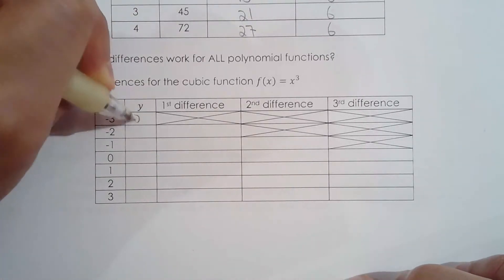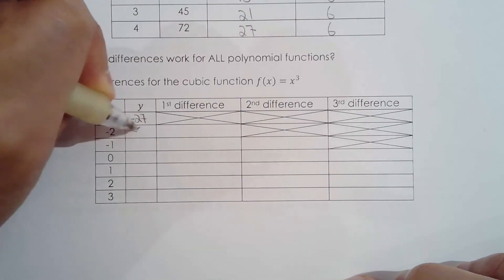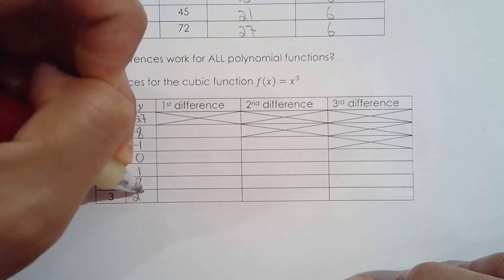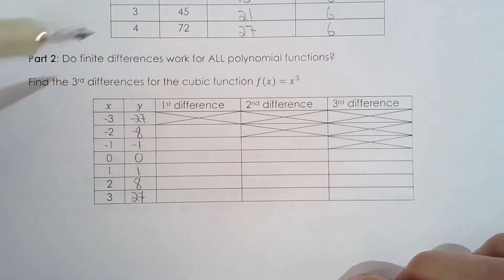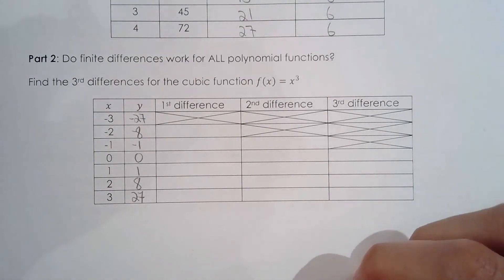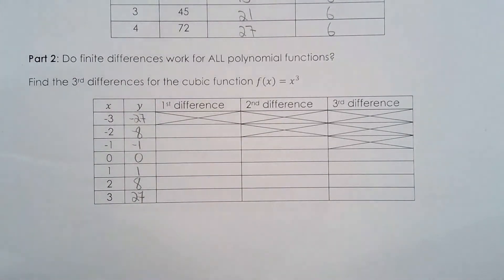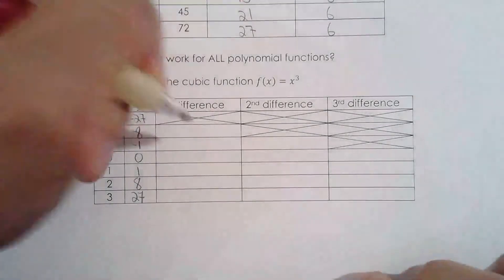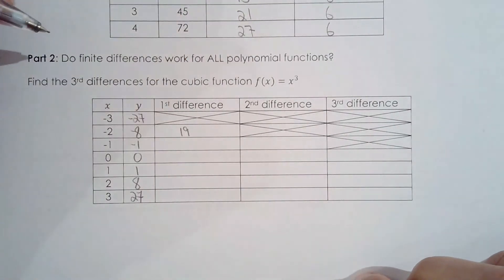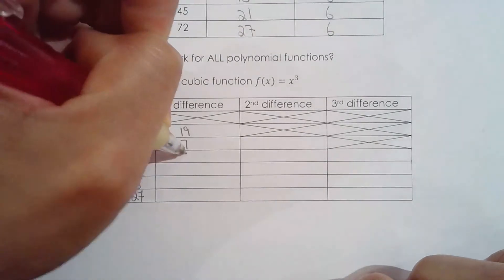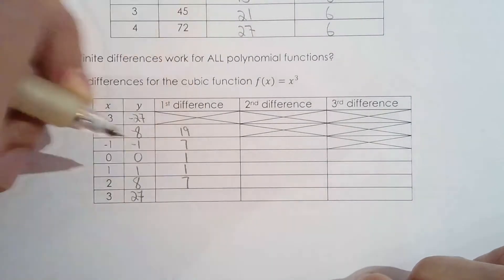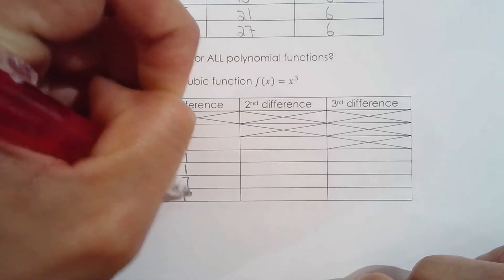Negative 3 cubed is negative 27, negative 8, negative 1, 0, 1, 8, 27. Just be very cautious here. If you make a silly mistake, it's going to cascade and cause a big problem. So really take your time. Sometimes I'll just use my calculator just to triple check because a small mistake here would be quite disastrous. So this is going to be increase of 19, increase of 7, increase of 1, increase of 1, increase of 7, increase of 19. So guess what? It's not linear.